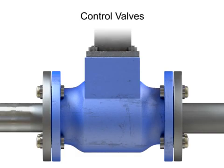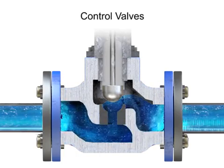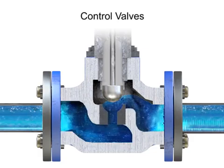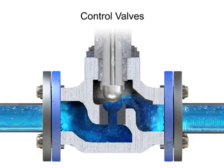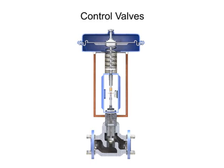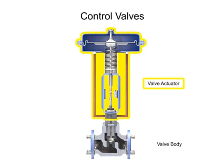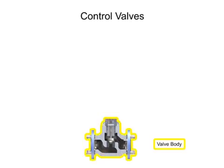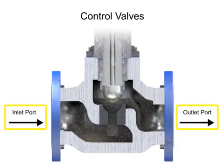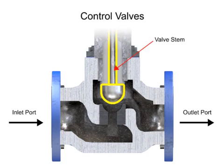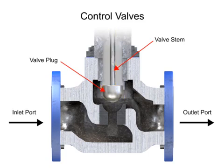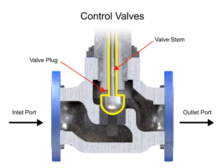Control valve actuators control fluid in a pipe by varying the orifice size through which the fluid flows. Control valves contain two major components: the valve body and the valve actuator. The valve body provides the fluid connections and a movable restrictor, comprised of a valve stem and plug that is in contact with the fluid and varies the flow. The valve actuator is the component that physically moves the restrictor to vary the fluid flow.